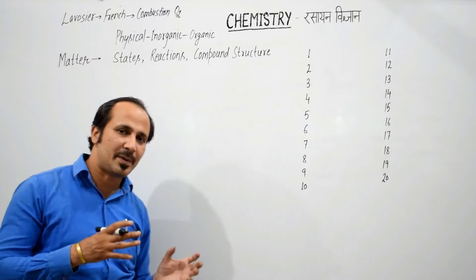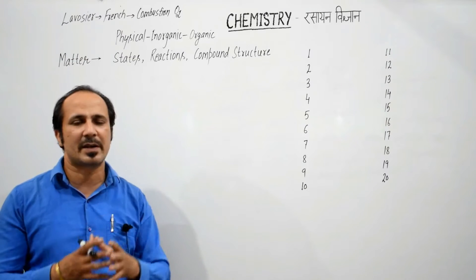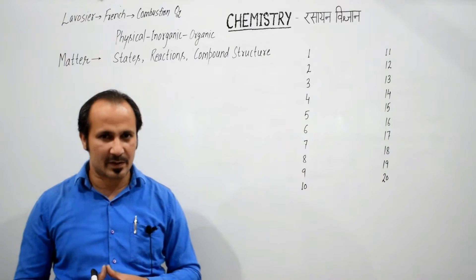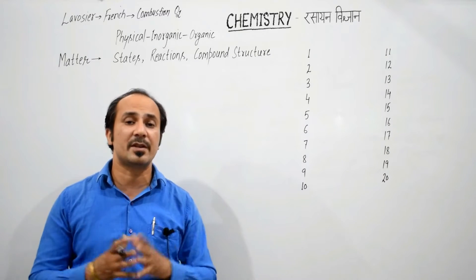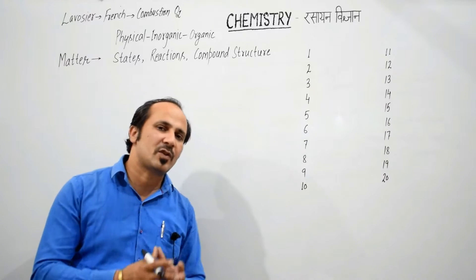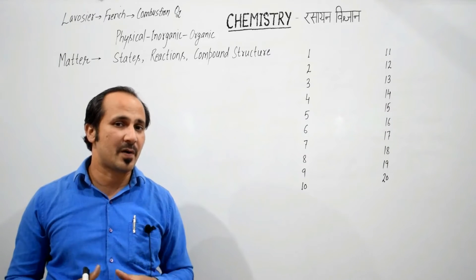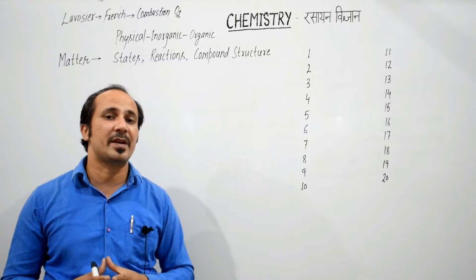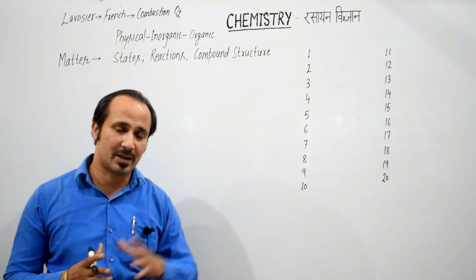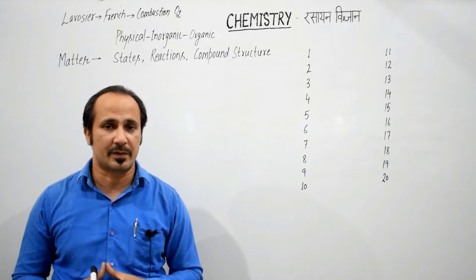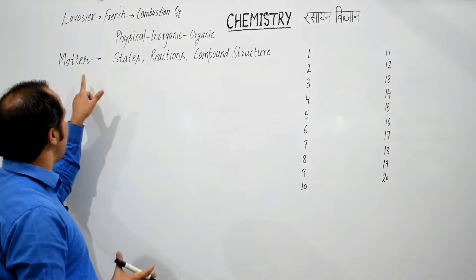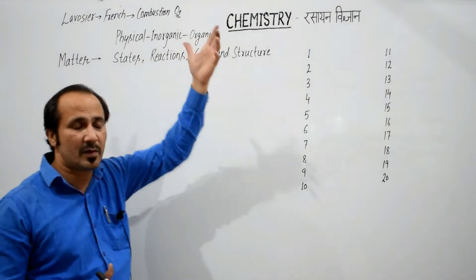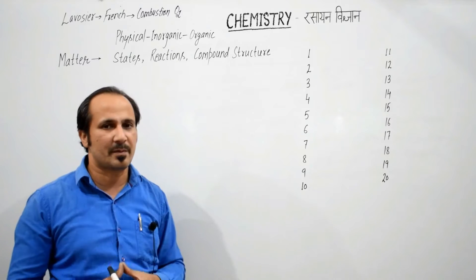Now you can divide chemistry into three parts: physical chemistry, inorganic chemistry, and organic chemistry. Chemistry is the branch of science in which we deal about matter — states of matter, about the way a matter reacts to another matter, and its compounds. So we all know about states of matter and the way a matter reacts to another matter and its compounds.